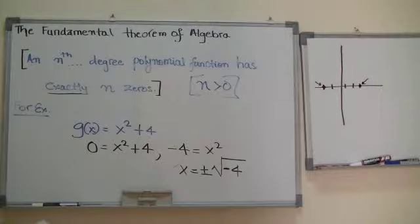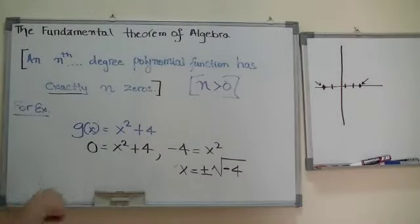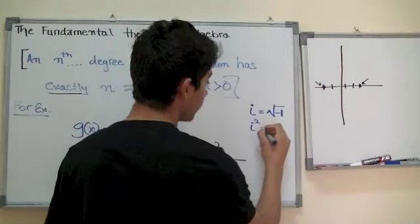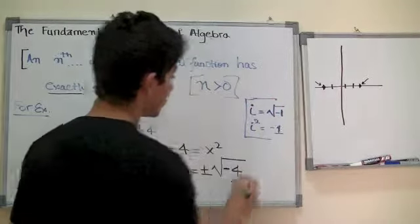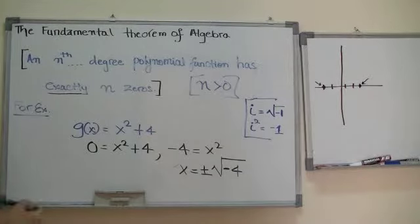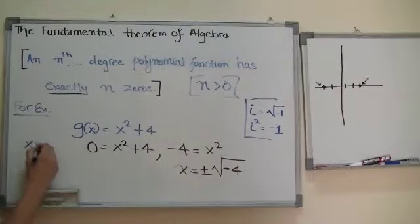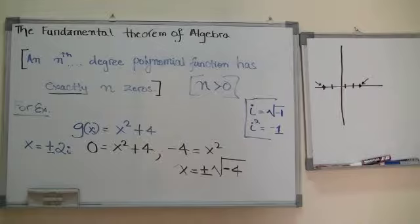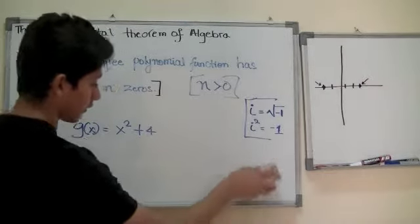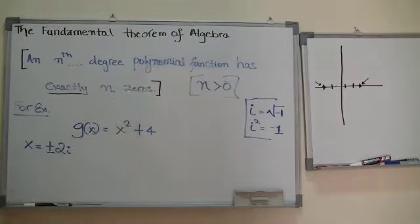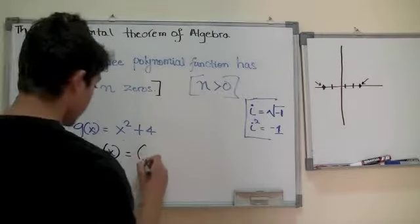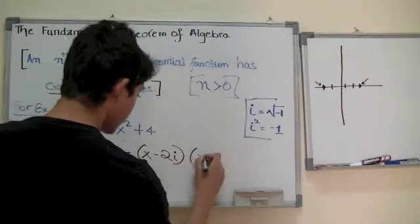Now that we learned about complex numbers in our previous section, we use the idea that i equals the square root of negative 1 and i squared equals negative 1. So x turns out to be equal to plus or minus 2i. If you try to find the factored form corresponding to plus or minus 2i, the factored form of g(x) would be (x minus 2i)(x plus 2i).